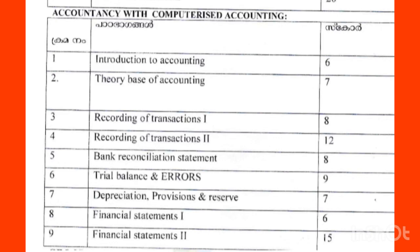If you look at the first chapter, that is 10 marks. You will predict that in the trading and profit and loss account. You can take the balance sheet and prepare it. So all the best with EC Commerce Concepts.